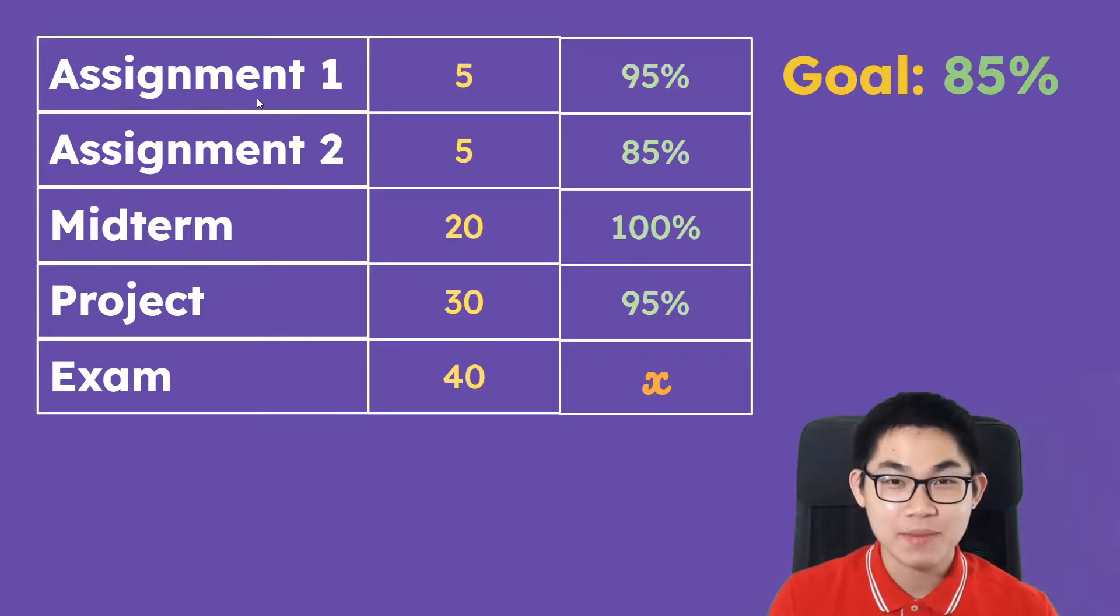So for assignment 1, you do very well on it and you get 95%, which is an A+. Assignment 2, you get 85%, for the midterm, you get 100%, for the project, you get 95%. Now, what exam mark do you need in order to get an 85% on the transcript?